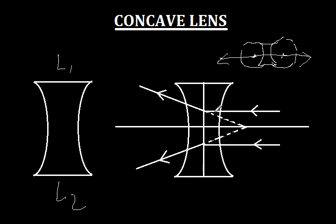Now, how is the focus of the concave lens defined? If a beam of light parallel to the principal axis of a concave lens enters the lens, after refraction they are converted into a diverging beam. It appears that these rays are coming from a point F, which is the focus of the concave lens.